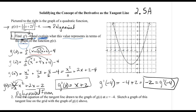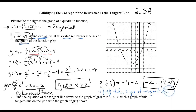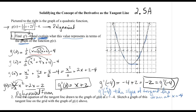The next part asks me to explain what this value represents in terms of the graph. Whenever we think derivative graphically, we should think tangent line — specifically, the slope of the tangent line. G prime of negative 4 represents the slope of the tangent line drawn at x equals negative 4, since the negative 4 is inside the function where we put our independent variable x.